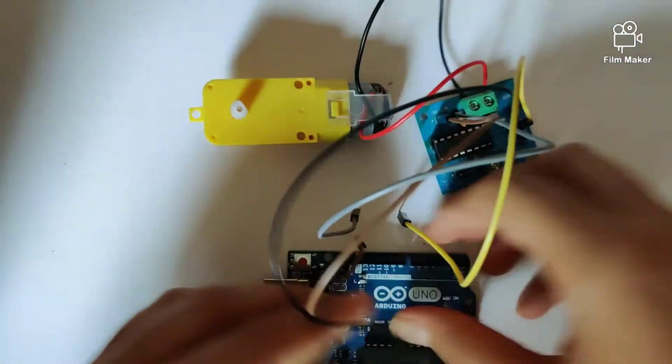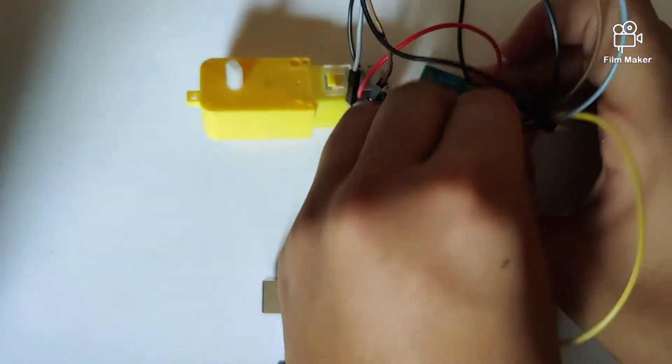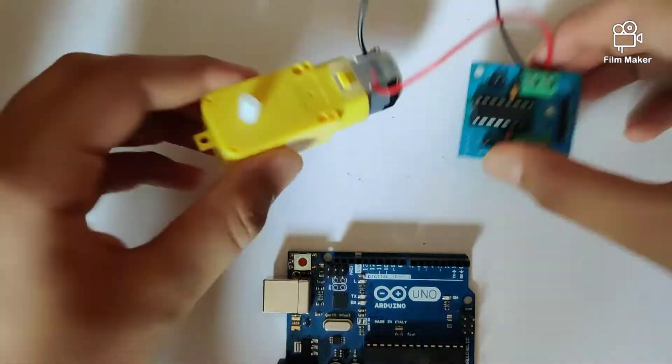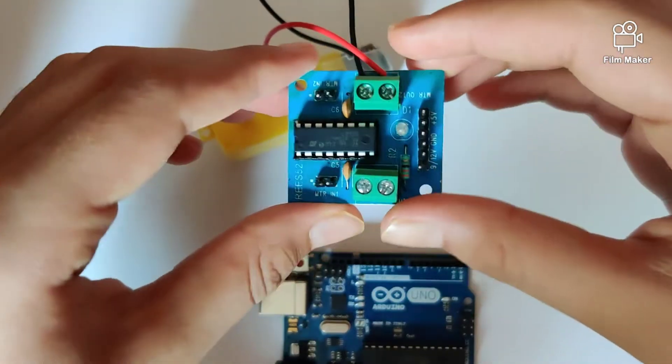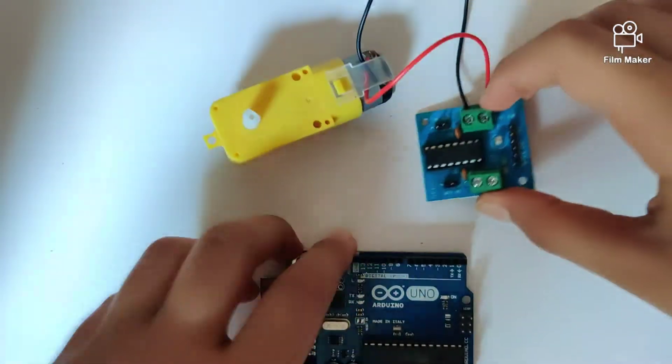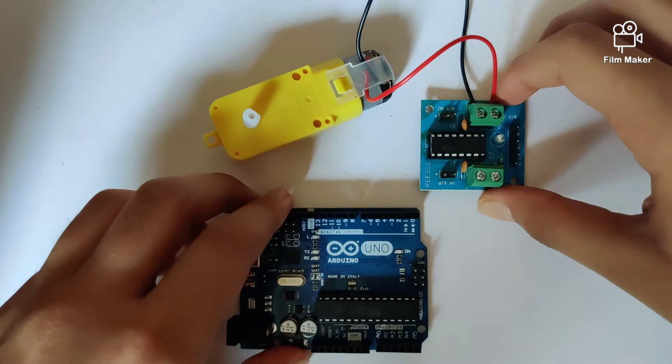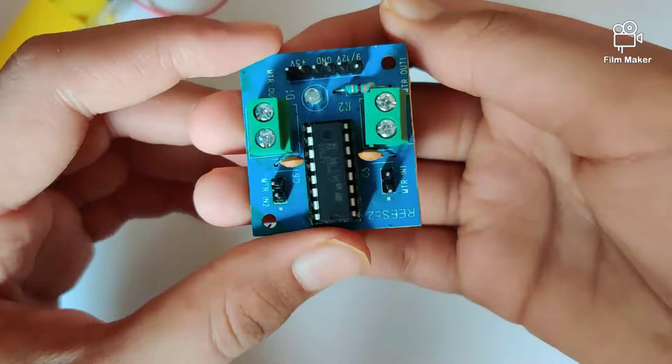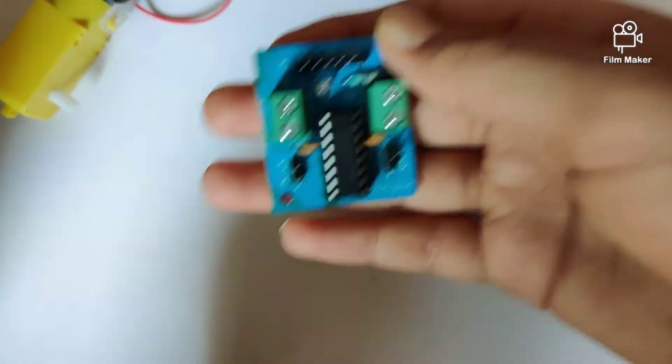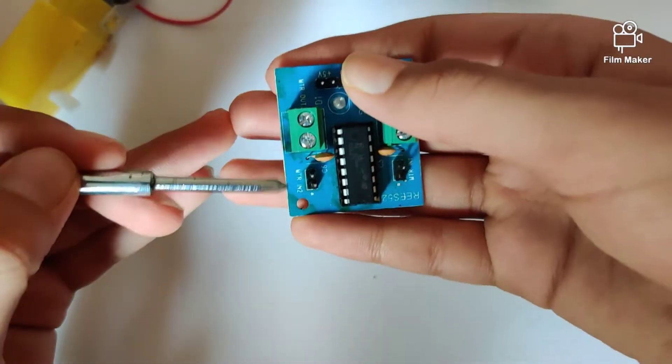In the circuit we will require a couple of jumper wires, a motor, an L293D motor driver module, and the Arduino Uno. So let's get started with the circuit. This module can support a total of two motors, one on this side and the other on this side.